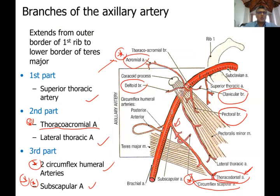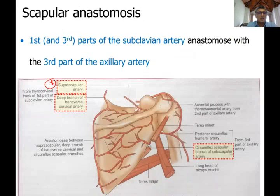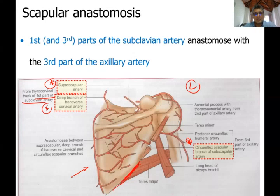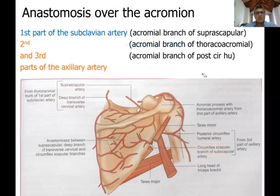Coming back to this picture: the suprascapular artery comes from the first part of the subclavian artery. This is the vertebral border and this is the lateral side. The deep branch of the transverse cervical artery is the contribution from the first part of the subclavian artery. You don't see the subscapular artery as such but you see its branches - the circumflex scapular branch - forming the anastomosis in the infraspinous fossa.